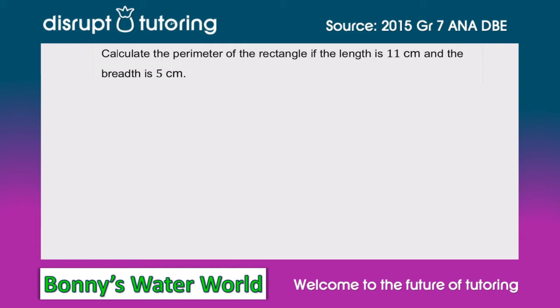Let's read the question together: calculate the perimeter of the rectangle if the length is 11 centimeters and the breadth is 5 centimeters. Before you do anything else, what I suggest is you draw your rectangle.